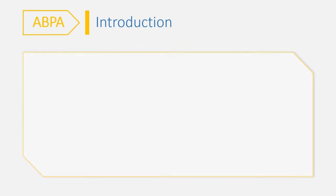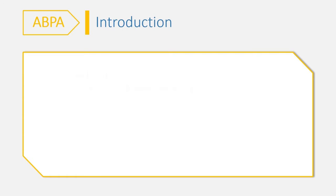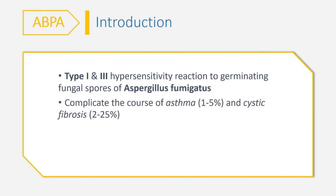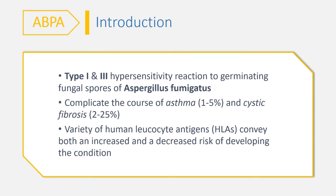Allergic bronchopulmonary aspergillosis, or simply ABPA, occurs as a result of a type 1 and type 3 hypersensitivity reaction to germinating fungal spores of Aspergillus fumigatus in the airway wall. This condition may complicate the course of asthma and cystic fibrosis, and it is also a recognized cause of pulmonary eosinophilia. Various human leukocyte antigens pose an increased and decreased risk of developing the condition, suggesting that genetic susceptibility is important.